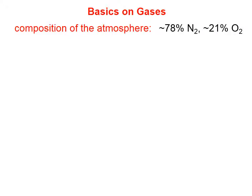First of all, you can't pretend to be a human unless you are aware that the composition of Earth's atmosphere is roughly 80% nitrogen and 20% oxygen. Numbers that are a little closer are about 78% nitrogen and 21% oxygen.